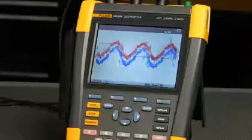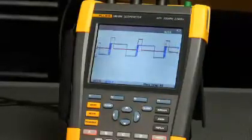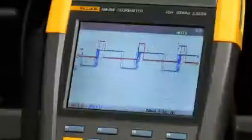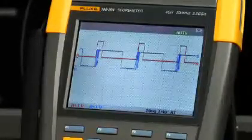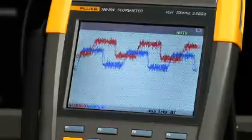Connect and view mode will automatically and continuously set up and trigger on a signal for a stable waveform display. This allows you to view the characteristics of even complex signals without touching the tool, so you can focus on troubleshooting.